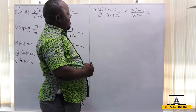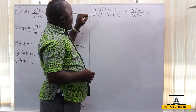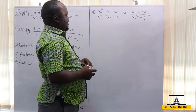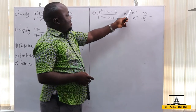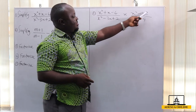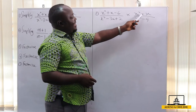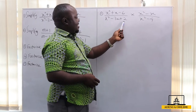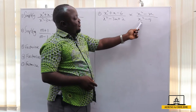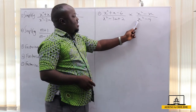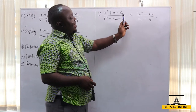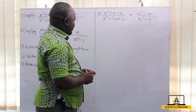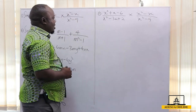This is how we go about it. This is a quadratic expression. This is also a quadratic expression. But this one has no constant. This is also another quadratic expression. And this is the difference of two squares. So if you are able to identify them easily, it becomes very easy for you to solve them.